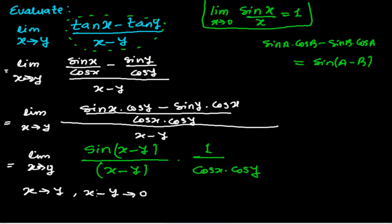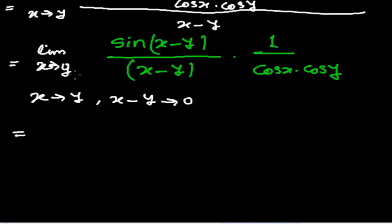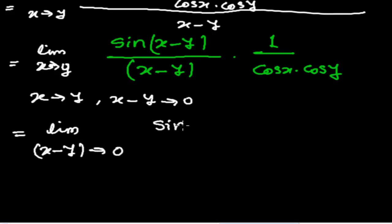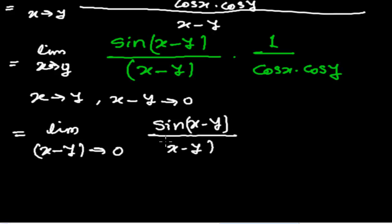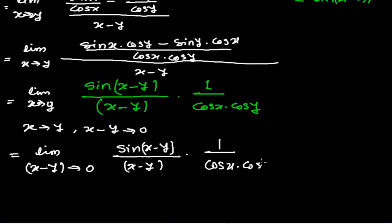When x tends to y, x minus y tends to 0. So we can rewrite the limit as: limit when (x − y) tends to 0 of sin(x − y) divided by (x − y), times 1 upon cos x times cos y.